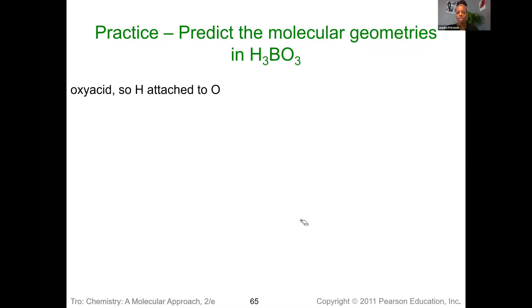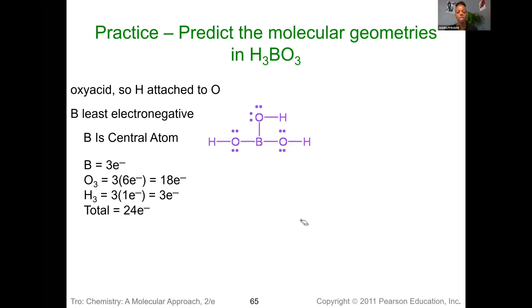And so we know that those hydrogens are terminal, so they would be on the external portion. Between boron and oxygen, boron is least electronegative, so that's going to be our central atom. And then we would end up putting those hydrogens external to those oxygens. So our Lewis structure should look something like so.